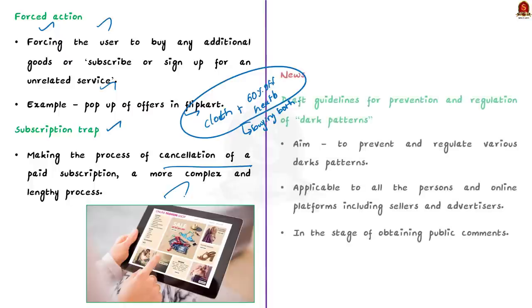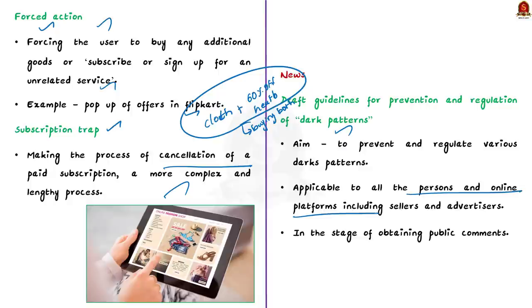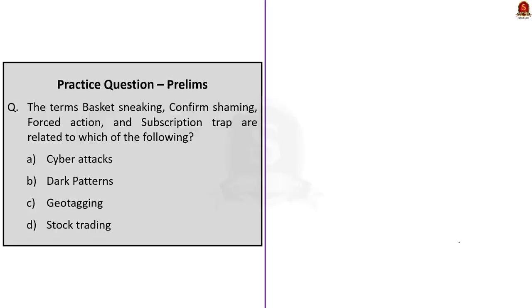As we saw in the news article, the draft guidelines for prevention and regulation of dark patterns were uploaded on the website of the Union Consumer Affairs Ministry. These guidelines aim to prevent and regulate the dark patterns we have seen. The government said that the guidelines would be made applicable to all persons and online platforms including sellers and advertisers. The central government has sought public comment on the draft guidelines, so we will have to wait and see what will happen in the future. In this discussion we saw what dark patterns are and various examples of dark patterns in the e-commerce industry.